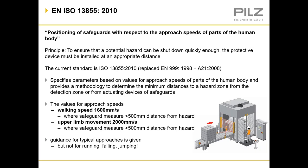The standard EN ISO 13855 covers the positioning of safeguards with respect to the approach speeds of parts of the human body. The aim of the standard is to make sure that when somebody goes through a safety device — whether it's a light curtain or opening a guard door — the machine has come to a standstill before they can reach any hazards and they do not come to harm.